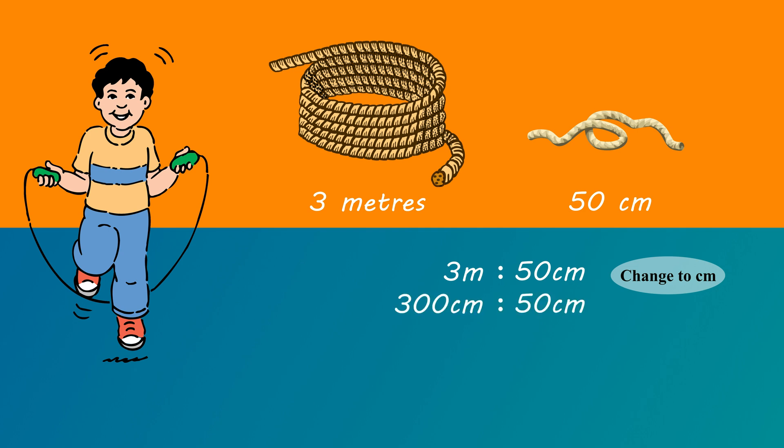Three meters is 300 centimeters. So the ratio is 300 centimeters is to 50 centimeters. Now delete the words. That's 300 is to 50. Notice that both numbers can be divided by 50 to give the final answer of six is to one.